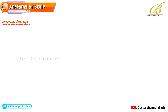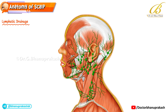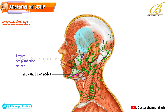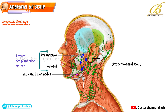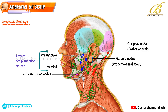The anterior scalp and forehead drain into the submandibular lymph nodes. The lateral scalp, especially the region just in front of the ear, drains into the preauricular or parotid nodes. The posterolateral scalp drains into the mastoid nodes, and the posterior scalp drains into the occipital nodes. Ultimately, lymph from all these regions converges into the deep cervical lymph nodes.